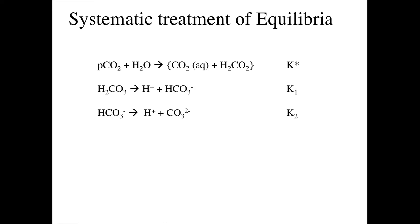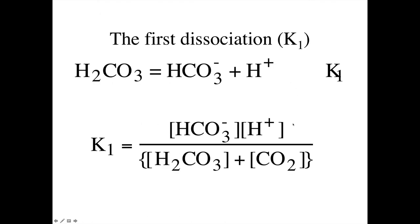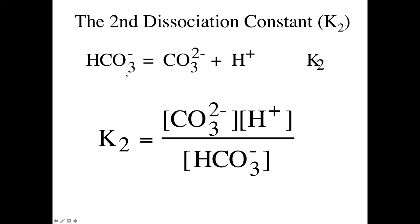Gas phase CO2 can dissolve in water to form both aqueous CO2 and carbonic acid, which we define with an equilibrium constant K*. Carbonic acid can dissociate to a proton and bicarbonate with equilibrium constant K1. Bicarbonate can dissociate into a proton and carbonate with equilibrium constant K2. Here are the equilibrium expressions, products over reactants, for both K1 and K2.